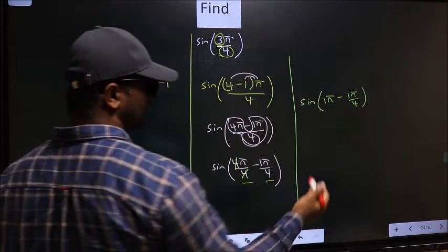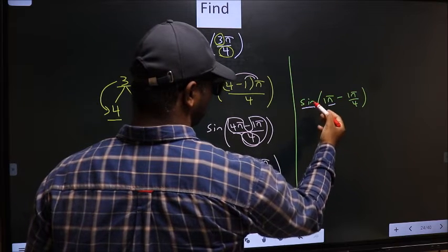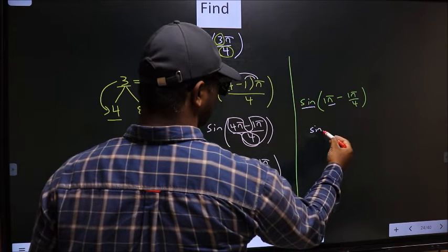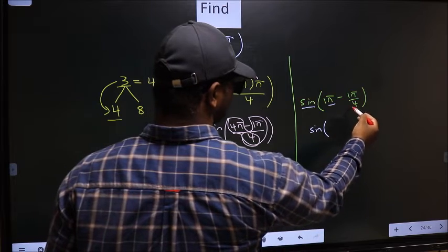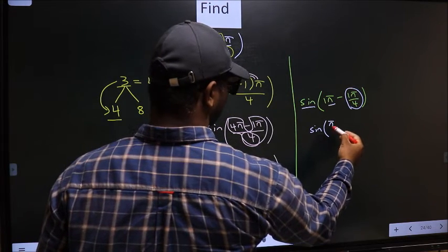Next, here we have π. So sin is not going to change. It will remain sin, and inside we get this angle π/4.